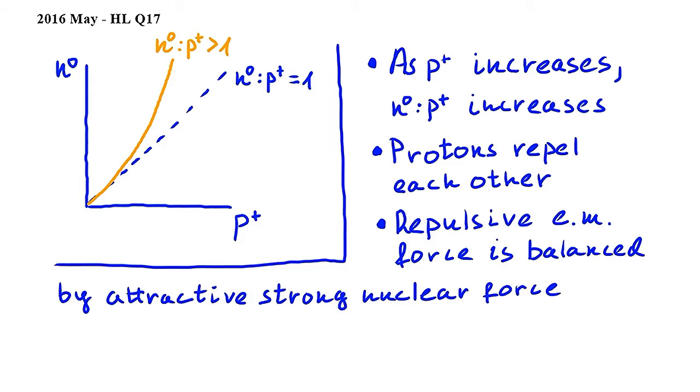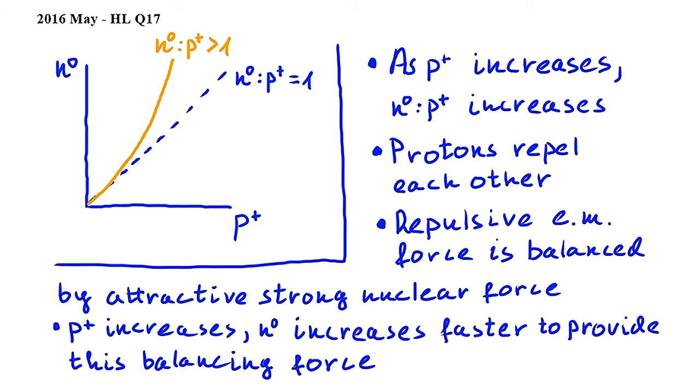So what we see from the graph is that as proton number increases, neutron number increases faster in order to provide this balancing force. The range of the electromagnetic force is infinite, while the range of the strong nuclear force is very short.